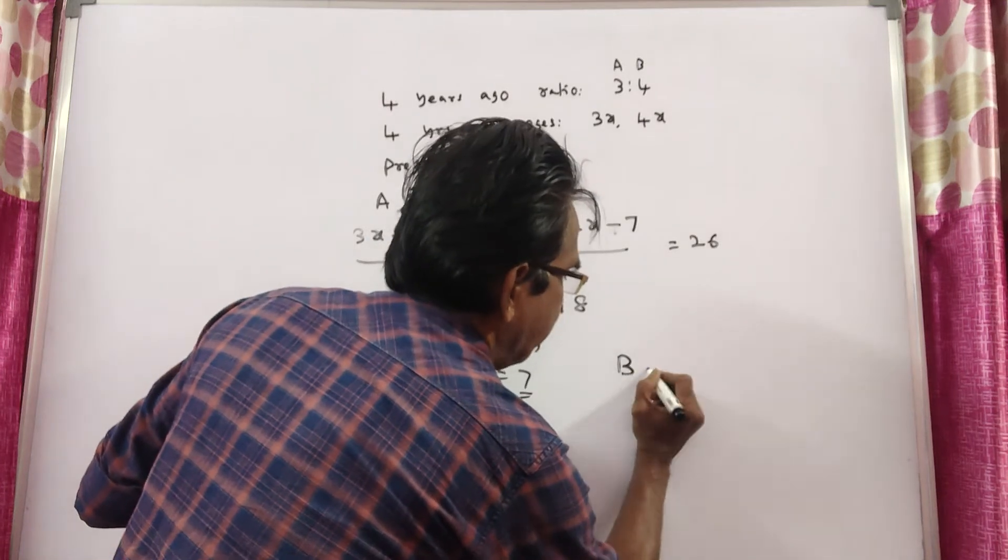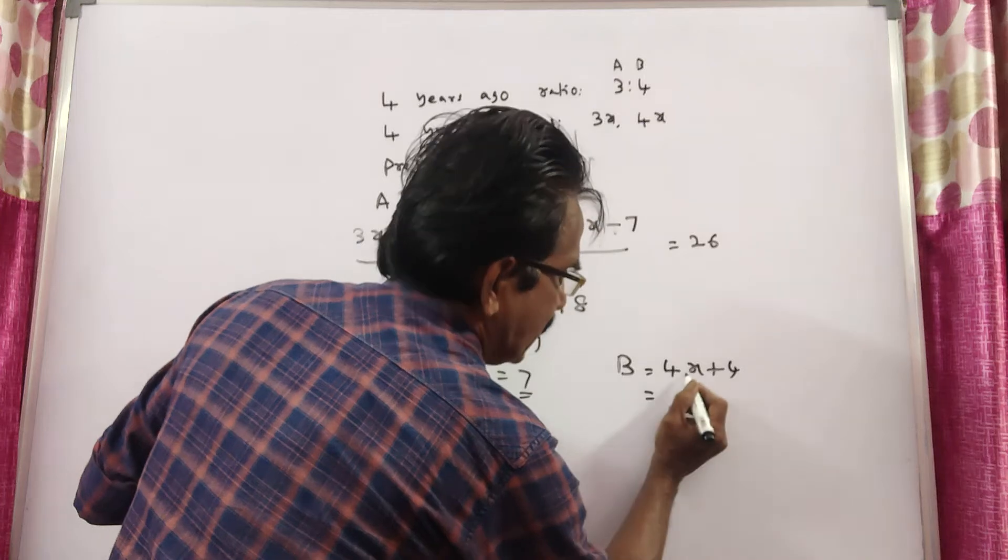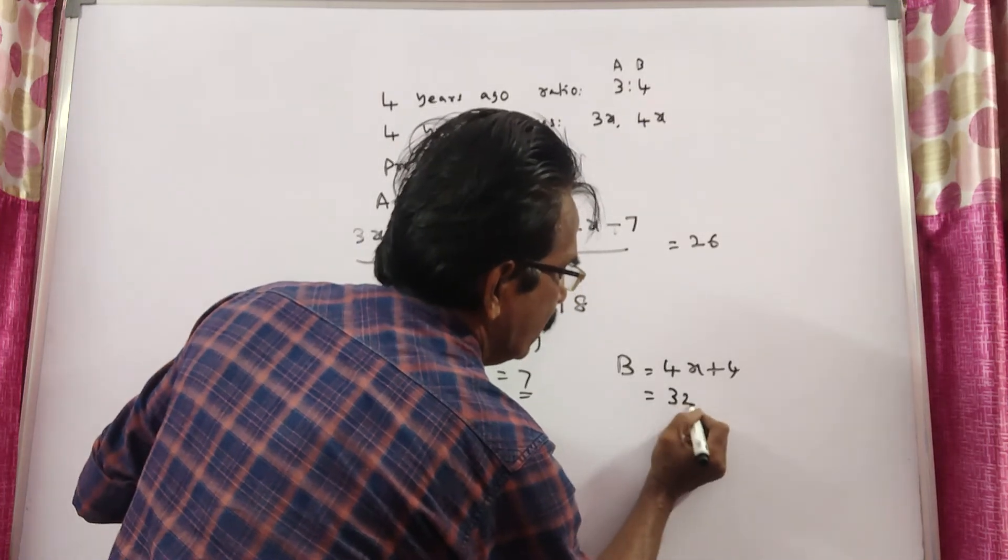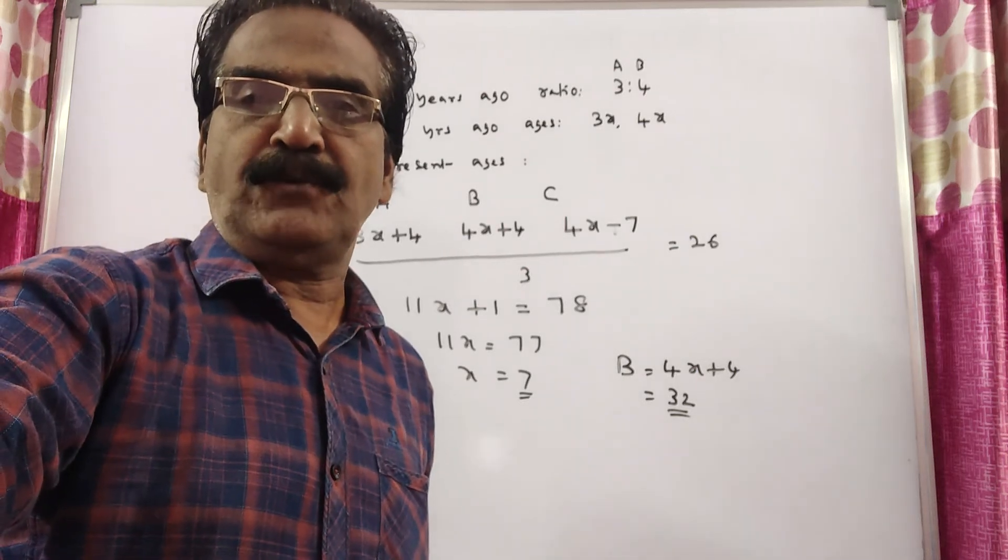Present age of B is equal to 4x plus 4, which is 32. Yes, that is your answer friends. Okay friends, thank you. Have a nice day.